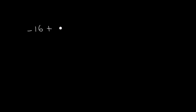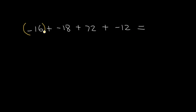Solve this one. By the way, don't get me wrong when I say take the sign of the bigger number — ignore the signs at first, compare the numbers, and then use the sign of the larger one. Negative 16 plus negative 18 plus 72 plus negative 12. First, group the negatives. Negative 16 plus negative 18 equals negative 34, and negative 34 plus negative 12 equals negative 46.